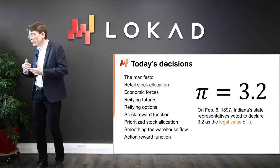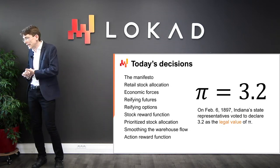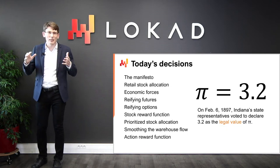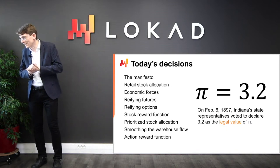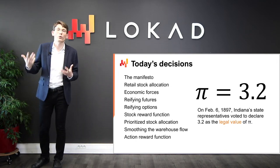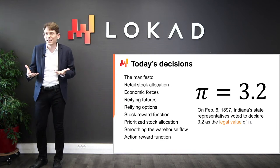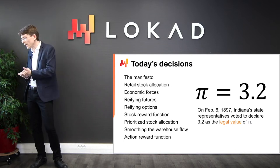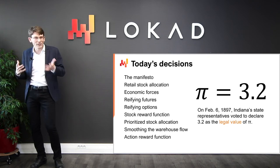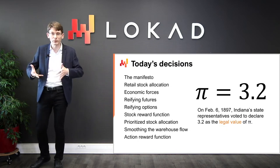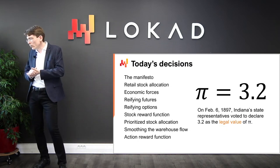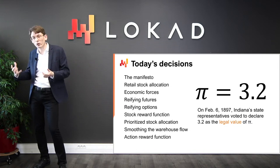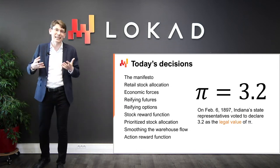On the screen, the summary for today's lecture. Even when considering the simplest supply chain problem — retail stock allocation — we have quite a lot of ground to cover. These elements represent building blocks for more complex situations. I will start by revisiting the manifesto of quantitative supply chain, then clarify what I mean by the retail stock allocation problem. The economic forces present in this problem will be reviewed. I will revisit probabilistic forecasts and how we represent them, and we will see how to model the decision by reifying the forecast but also reifying the options — the candidate potential decisions.